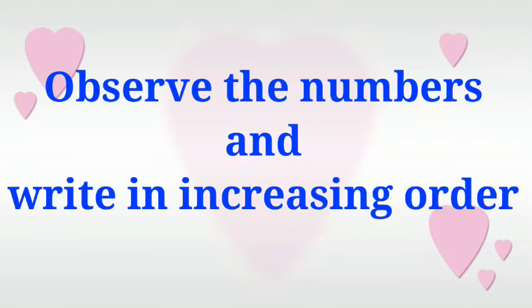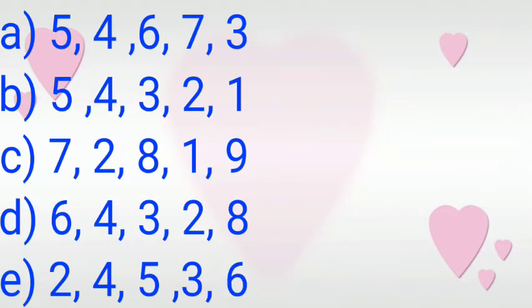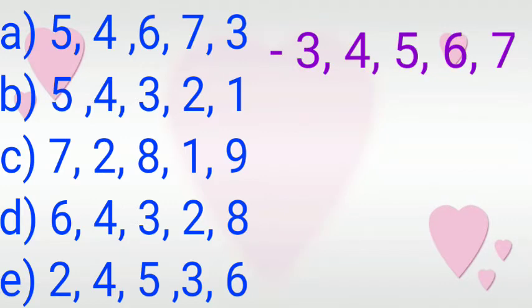Now we will solve our worksheet. Observe the number and write in decreasing order. Let's start. See the numbers. A number is 5, 4, 6, 7, 3. At first count 1 to 9 and which number is coming first? Yes, 3. 3 will come first. At first write 3, then 4, then 5, then 6, then 7.